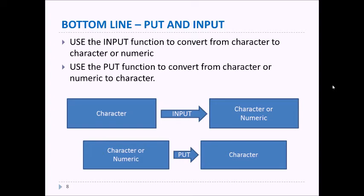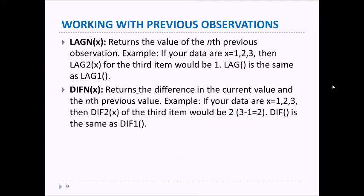A couple of other good functions are the LAG and DIFF functions. LAG returns the value of the nth previous observation. So for example, if your data were 1, 2, and 3, then LAG2 of X for the third item would be 1, and LAG without the number in front is the same as LAG1. Similarly, DIFF function returns the difference of two values. So if again our data is 1, 2, 3, then DIFF2 of the third item would be 3 minus 1 equals 2.